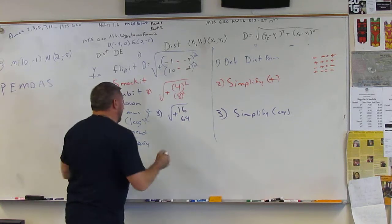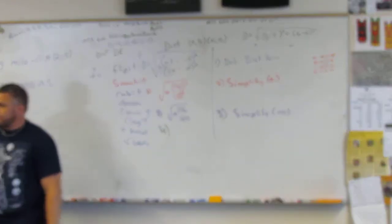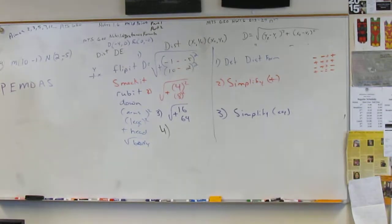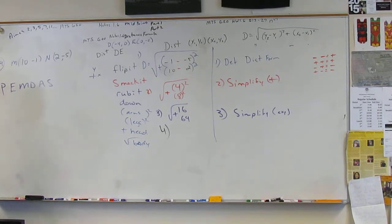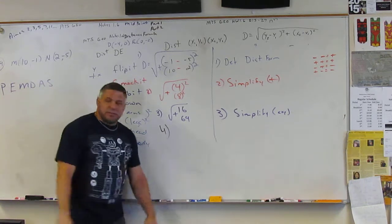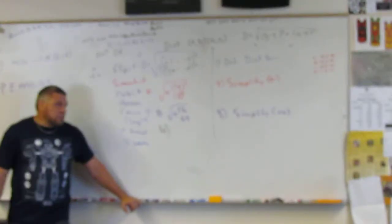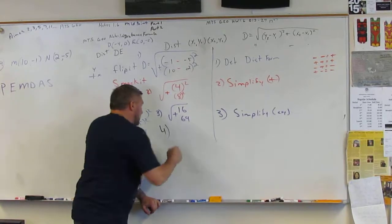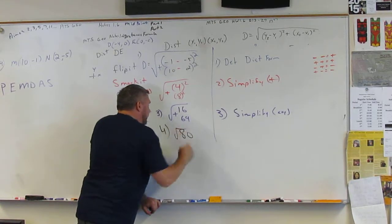All right, next. 4. Add it together. 16 plus 64. Yep, 80. All right? So the square root of 80.